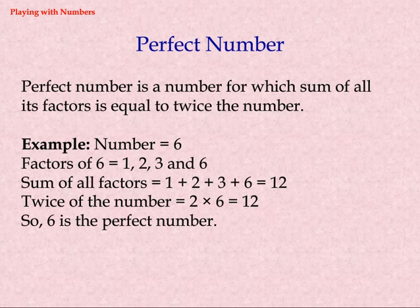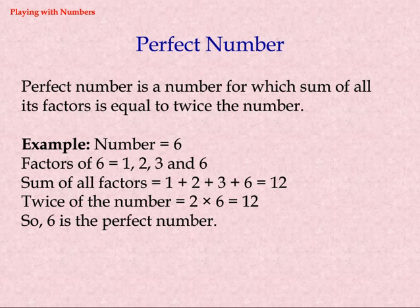Perfect number — a perfect number is a number for which the sum of all its factors is equal to twice the number. Example: for the number 6, factors of 6 are 1, 2, 3, and 6. Sum of all factors equals 1 plus 2 plus 3 plus 6 equals 12. Twice the number equals 2 into 6 equals 12. So, 6 is a perfect number.